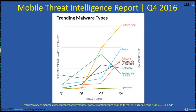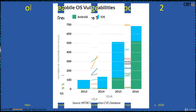This is the mobile threat intelligence report Q4 2016 from Symantec. The number of hidden apps is increasing enormously — Trojans, adware, unwanted apps — these are increasing. Just read this report for more information.